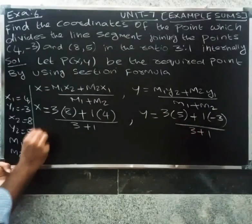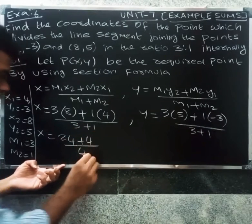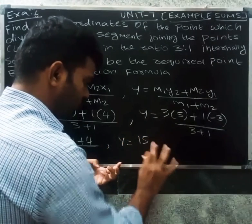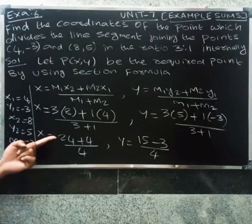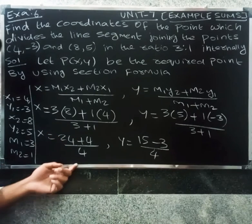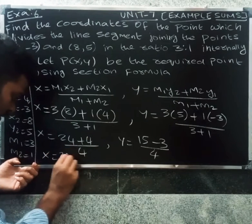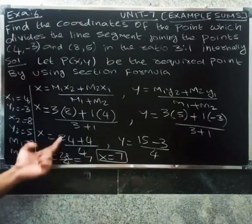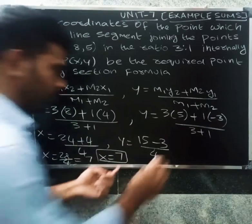So x = (3×8 + 1×4) / 4 = (24 + 4) / 4 = 28 / 4 = 7. So x equals 7.